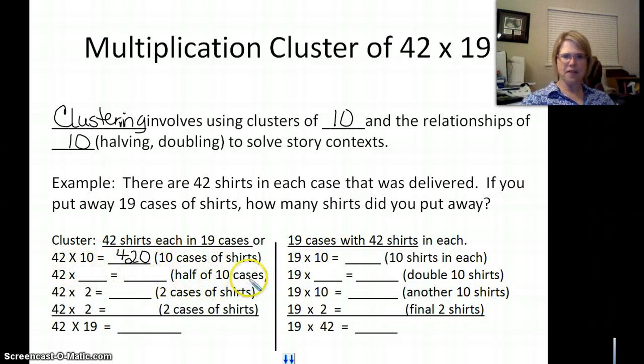Now we're going to take half of 10 cases. Well, what's half of 10? 5, right? We can find out what 42 times 5 is by just taking half of 420. Let's see if we can do it in our head. Ready? Half of 400, 200. Half of 20, 10. Now put it together. 210. Good.